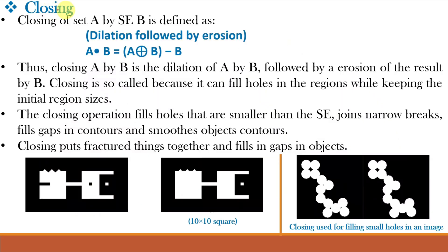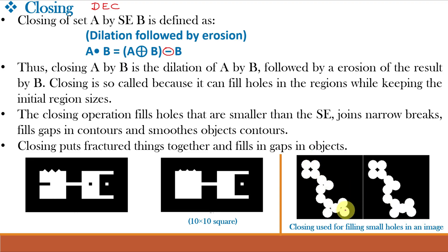Closing is just the opposite of opening — it is dilation followed by erosion. The closing of set A by structuring element B is defined as A • B = (A ⊕ B) ⊖ B. The closing operation fills holes smaller than the structuring element, joins narrow breaks, fills gaps in boundaries, and smooths object boundaries. For example, closing with a 10×10 structuring element fills small holes in the image, and we will also implement this in MATLAB.